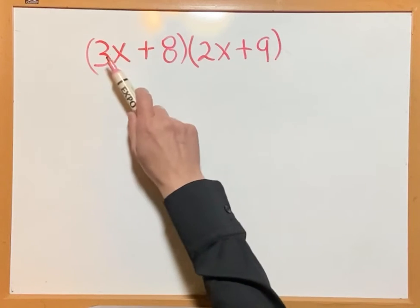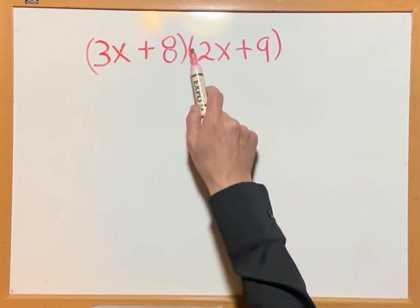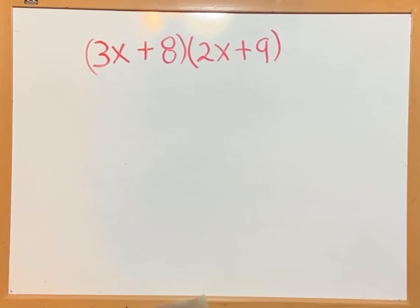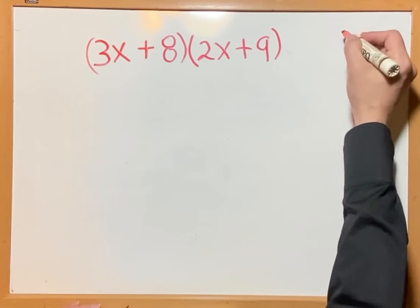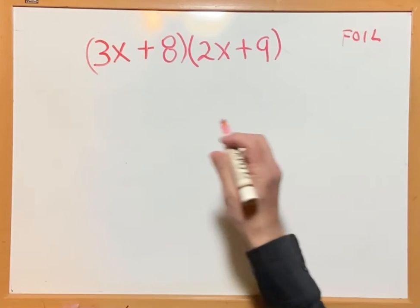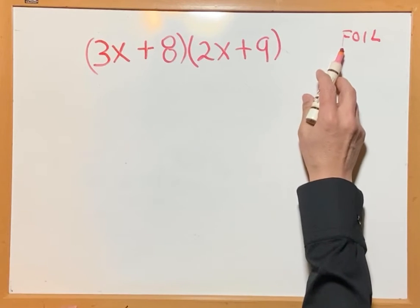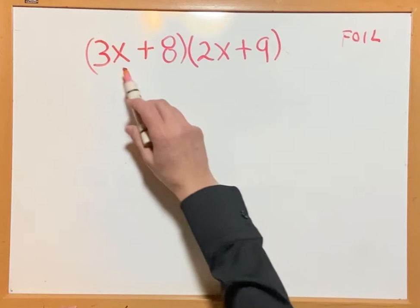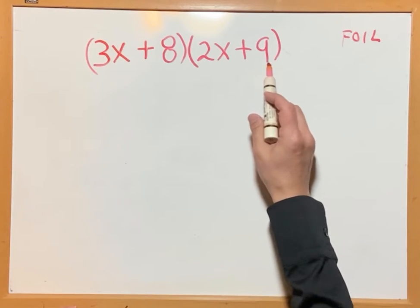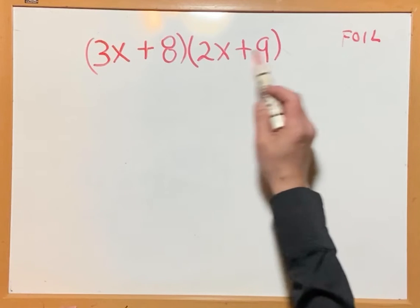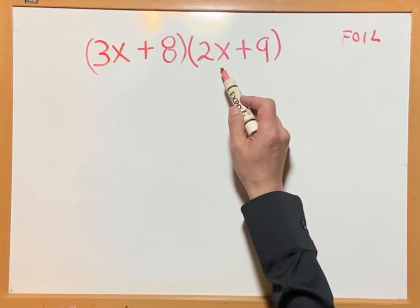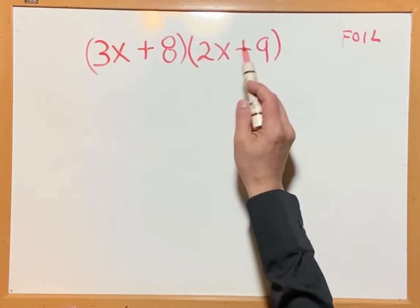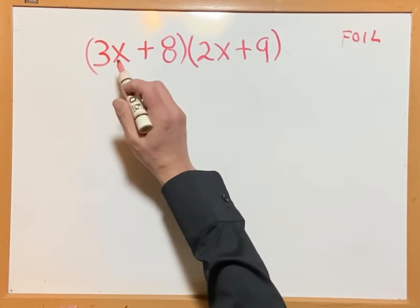Right now, if the coefficient of the variable is going to be different from one, then we start doing FOIL. That means F for the first terms, O for the outer side, I for the inner side, and L for the last term.